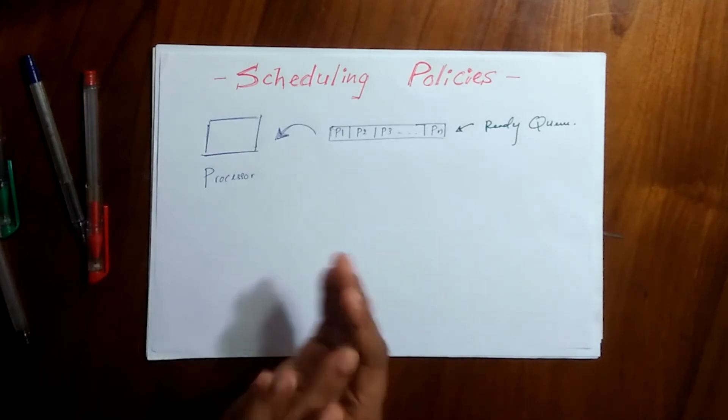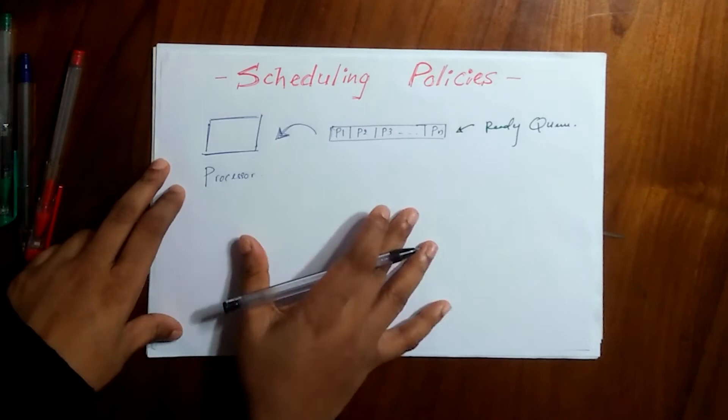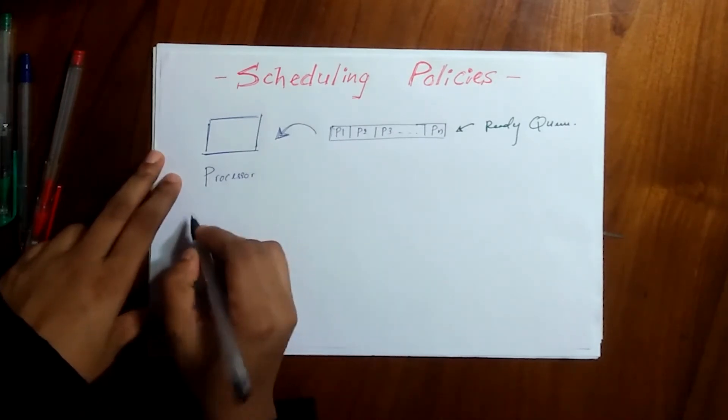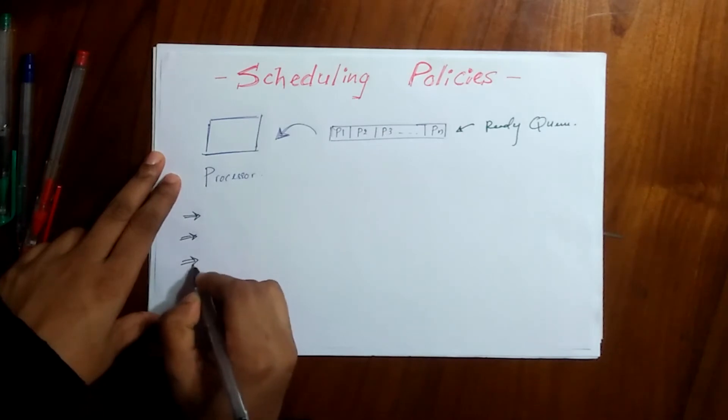So what is the job of the scheduling policies? They decide which process will be in the processor. I hope that you understood what are these scheduling policies. Now let's move to the next step. In the next videos I'm going to discuss with you five main scheduling policies.